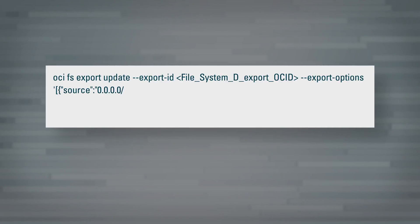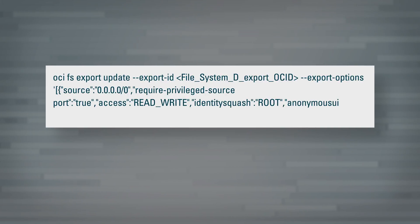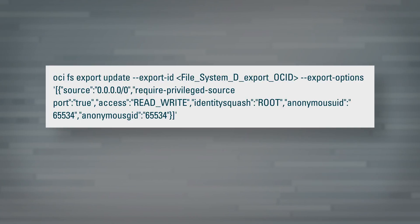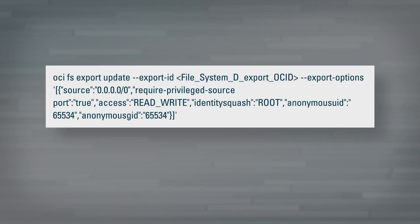Now let's say in a different scenario, in order to increase security you want to limit root user's privileges when connecting to file system D. How can we achieve that? Use identity squash to remap root users to UID and GID 65534. In Unix-like systems, this combination is reserved for 'nobody', which is a user with no system privileges.